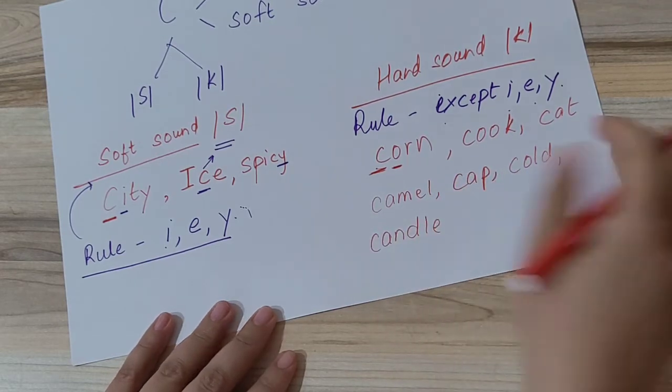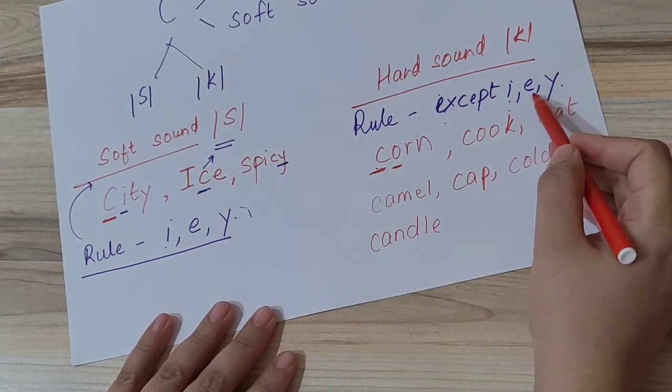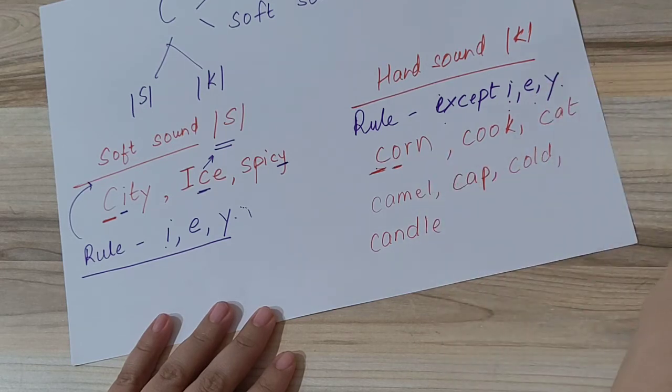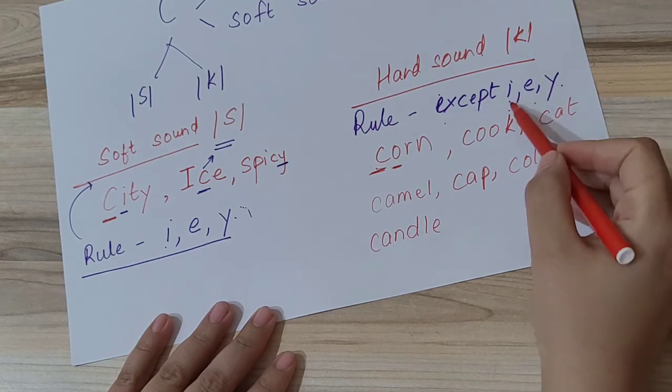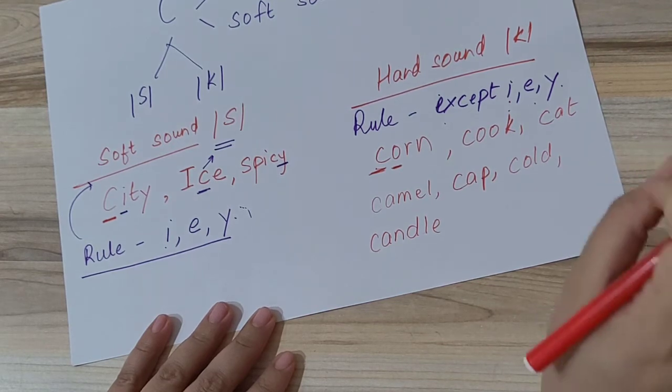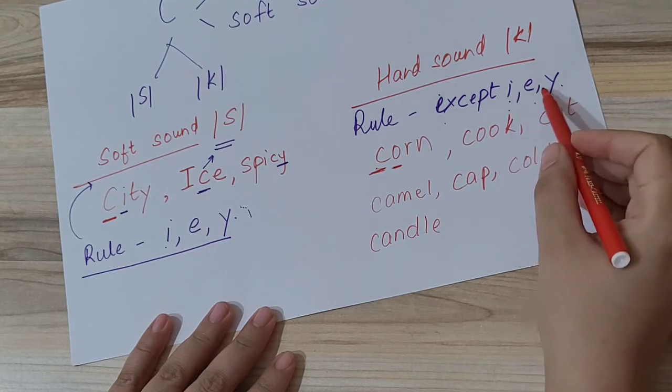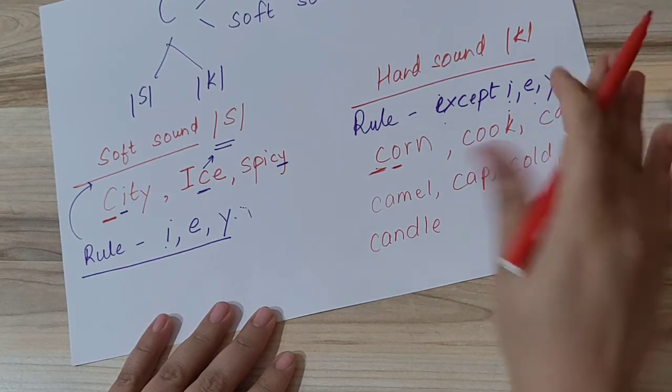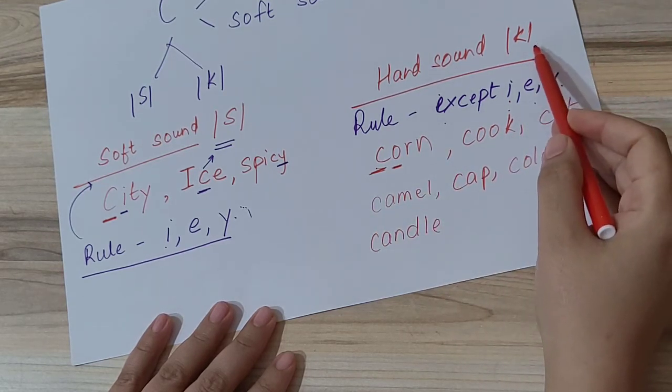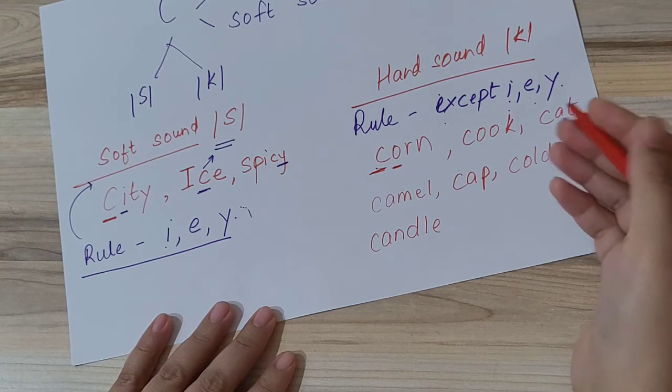You may see in all these words, after C there is neither I, nor E, nor Y. So all those words in which after letter C, letters I, E, and Y do not come, in such words letter C's sound we will pronounce as 'ka' and not 'sa'. We will use the hard sound of C in such letters.